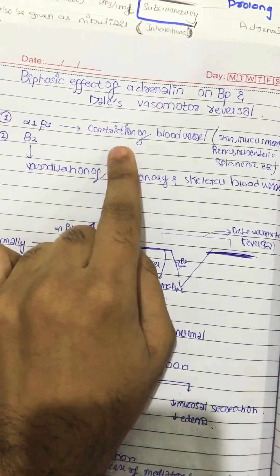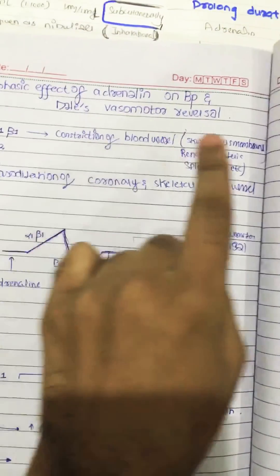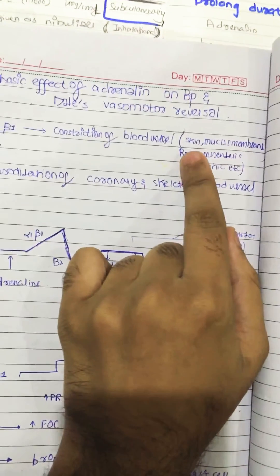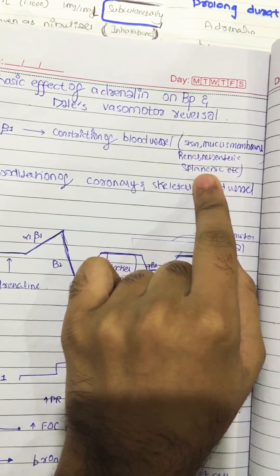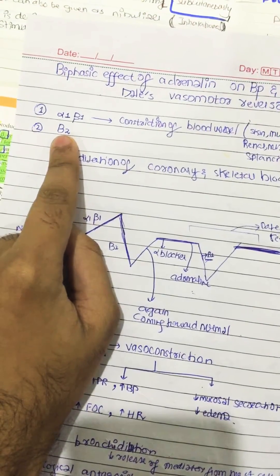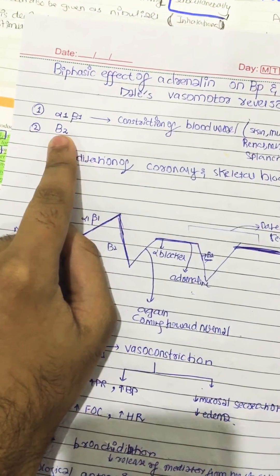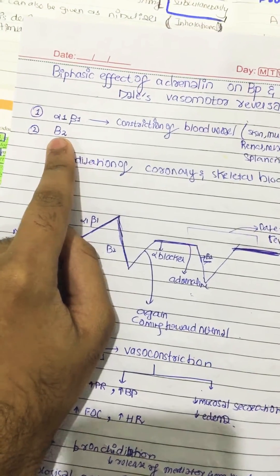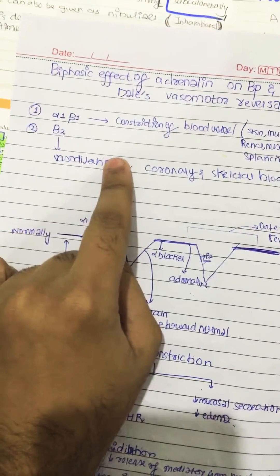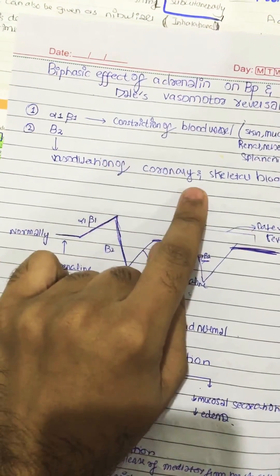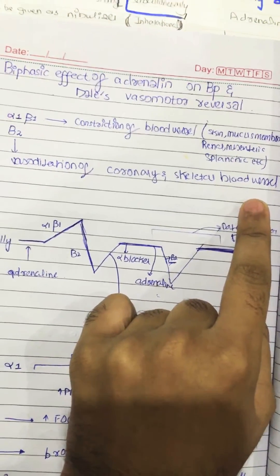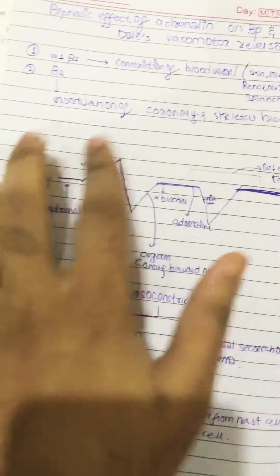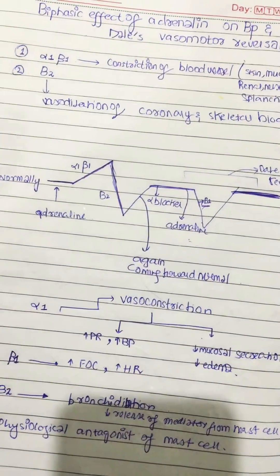First, adrenaline acts on alpha-1 and beta-1, causing constriction of blood vessels — mainly those of the skin, mucous membrane, renal, mesenteric, and splanchnic regions. After some time, it acts on beta-2 receptors, causing vasodilation of the coronary and skeletal muscle blood vessels.